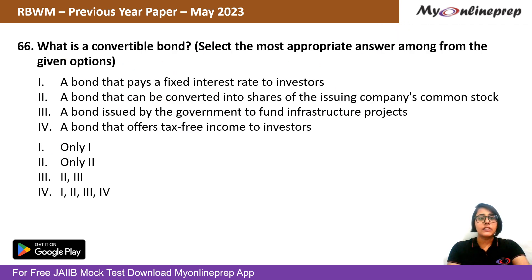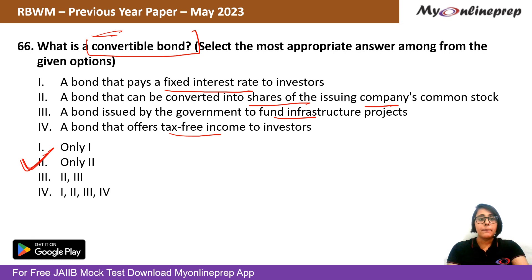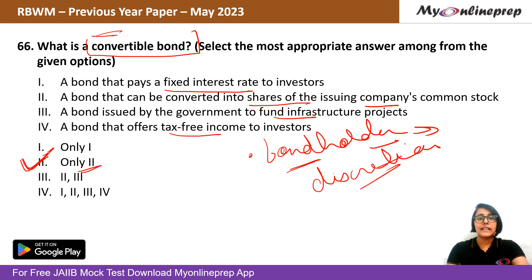Question 66: What is a convertible bond? Options: (A) a bond paying fixed interest to investors; (B) a bond that can be converted into shares of the issuing company's common stock; (C) a government bond to fund infrastructure; (D) a bond offering tax-free income. The term 'convertible' indicates it can be converted into the issuing company's common stock. A bond holder may choose to convert their holdings into shares at their discretion. The right answer is option B.